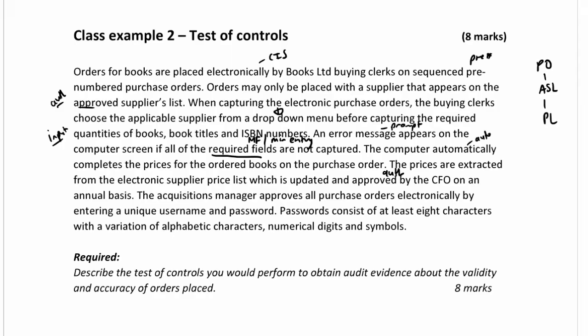Prices are extracted — that's minimum entry — coming straight from the price list. The acquisitions manager approves all purchase orders electronically, so we have authorization here. Entry requires a unique username and password, giving us access controls and segregation of duties — the manager is the authorizing party. Passwords consist of at least eight characters, so there's a size or length check.